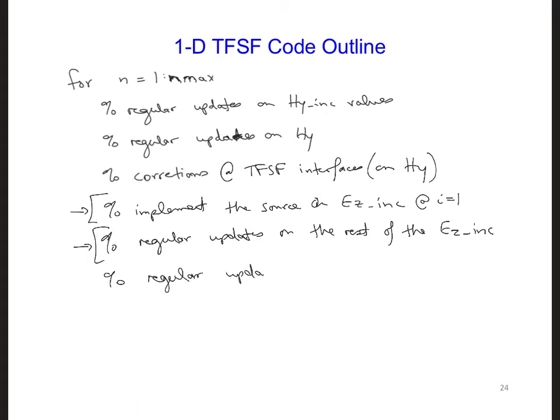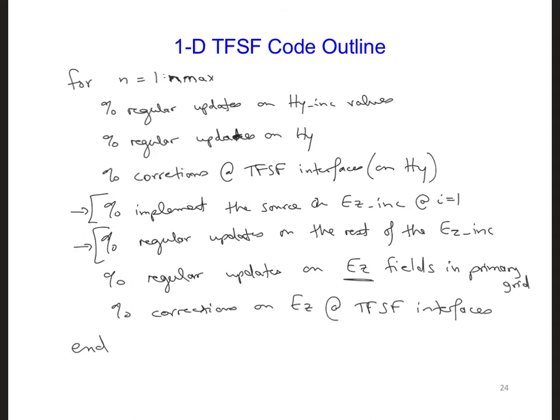Then we can move on to the regular updates on the Ez fields in the primary grid. And then lastly, we need corrections on Ez at the two total field scatter field interfaces to incorporate the plane wave into the primary grid. And that should be the main sections of the time-stepping loop.